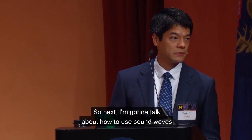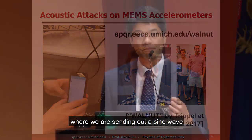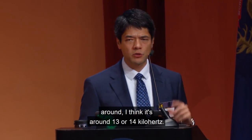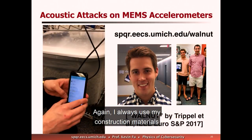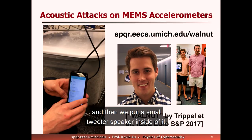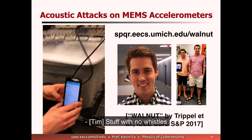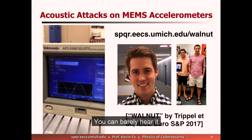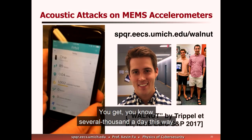Next I'm going to talk about how to use sound waves to trick sensors into seeing false realities. Tim was the lead student on this. You're about to see a video where we're sending out a sine wave around 13 or 14 kilohertz — you'll be able to hear it — and it's causing a Fitbit to missense. I've got leftover insulation from my house because I couldn't afford a real acoustic chamber. We filled a Sterilite box, put a small tweeter speaker inside next to a Fitbit linked via Bluetooth, and we're going to see the step counter on the phone as we're sending out the sound wave. You can barely hear it — that whining sound — and the steps: 80, 81, 82, 83, 84, 85 — keeps going. You can get several thousand steps a day this way.